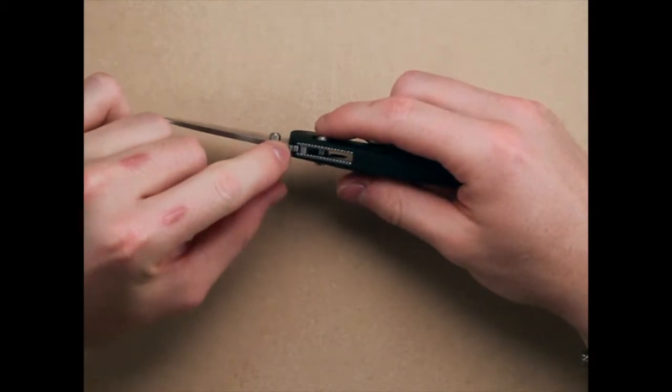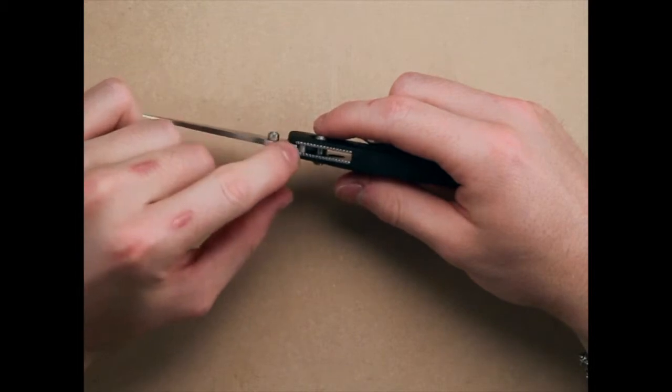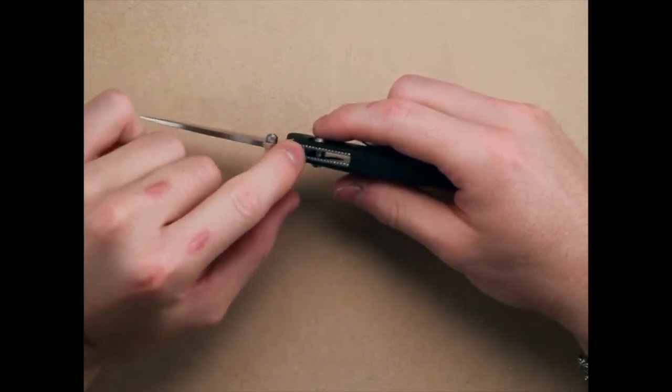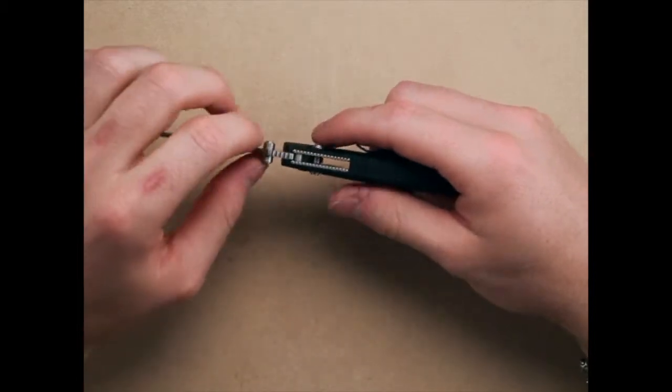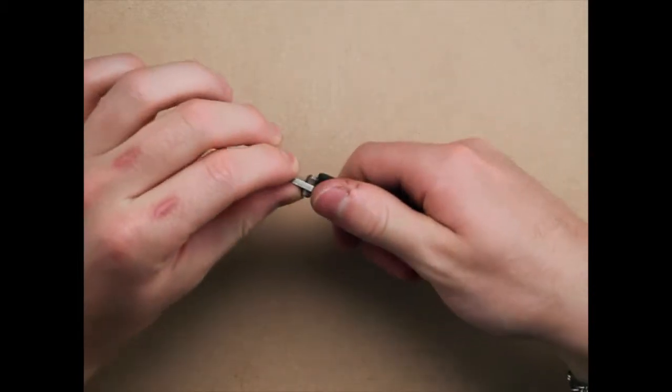There's some jimping on the back of the blade here, and it extends into the grip. The liners have some jimping, as well as the Valox handles. So plenty to rest your thumb on right there.